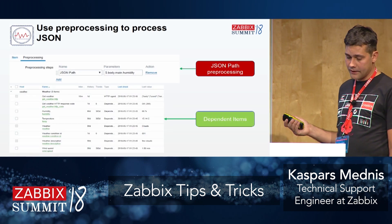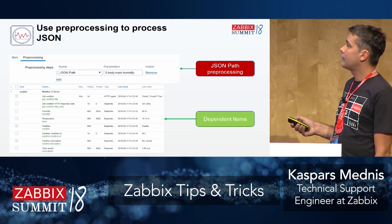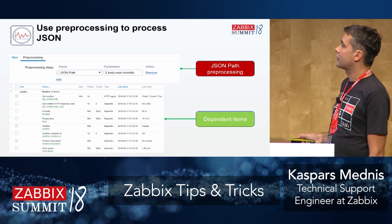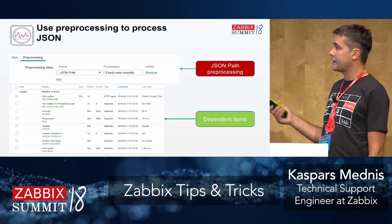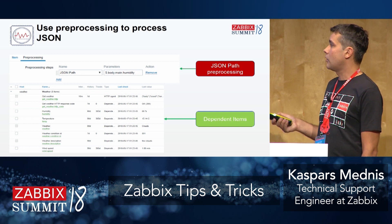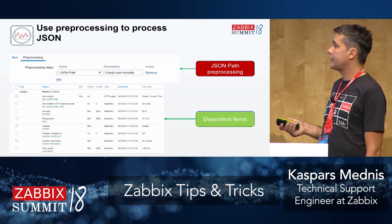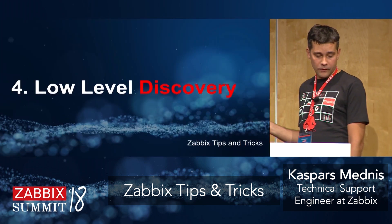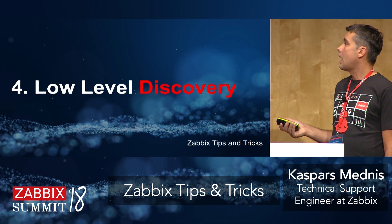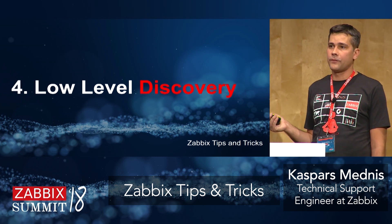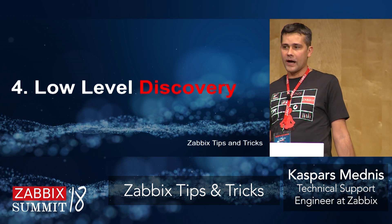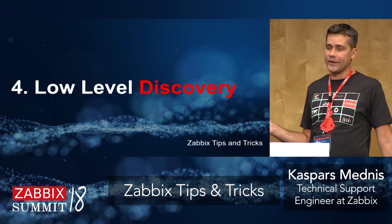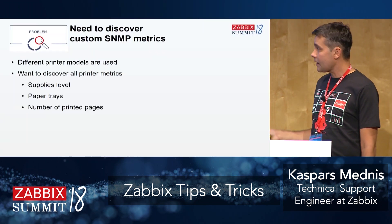Here you have the results: the JSON path for each dependent item, the syntax, and many dependent items. Weather data are collected just once with one API call and all data are extracted by Zabbix. My golden rule for low-level discovery: if you can discover something, discover it — it makes things easier and easier.